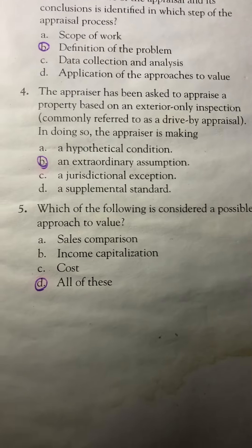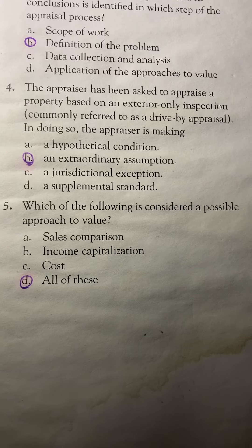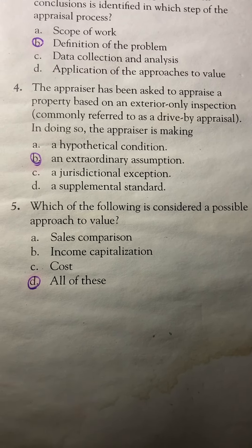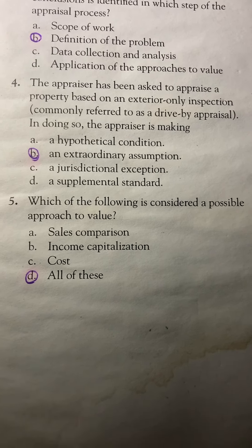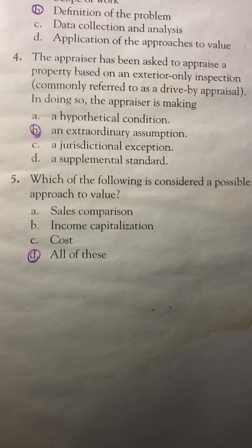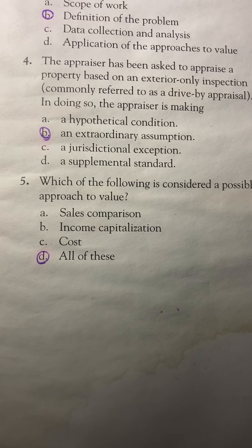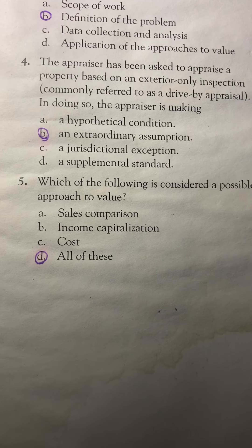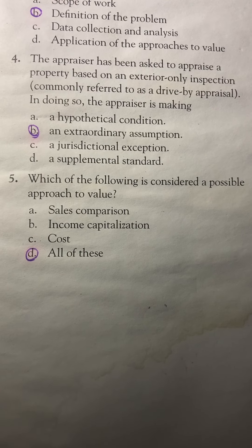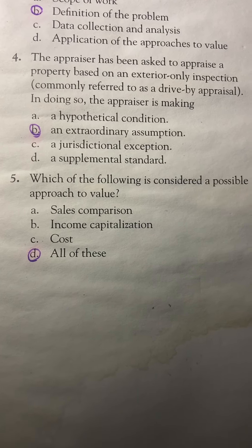Number 5. Which of the following is considered a possible approach to value? A. Sales comparison, B. Income capitalization, C. Cost, or D. All of these. The answer is D: All of these.